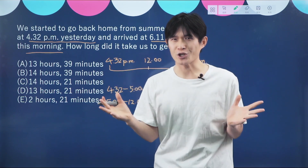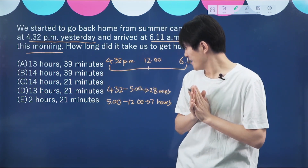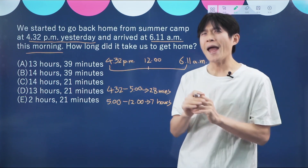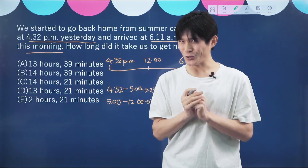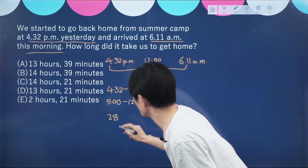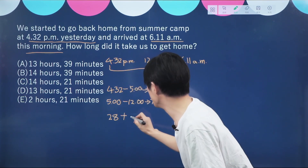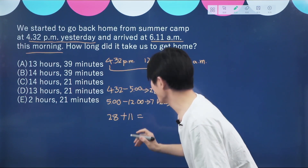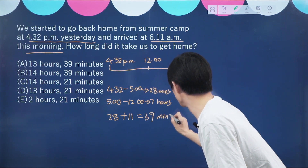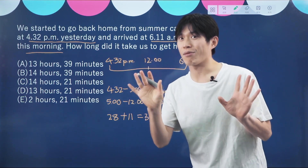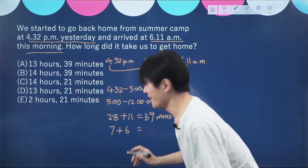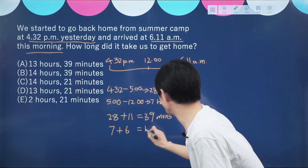Now what is the whole duration? We simply add them up. So 7 hours and 28 minutes plus 6 hours and 11 minutes. 28 minutes plus 11 minutes equals 39 minutes. And then 7 plus 6 equals 13 — so 13 hours.